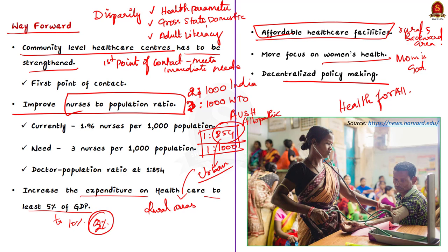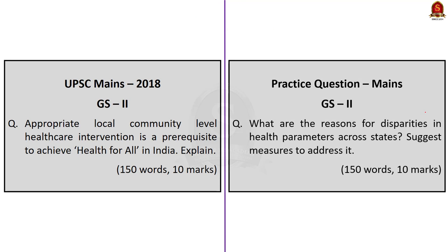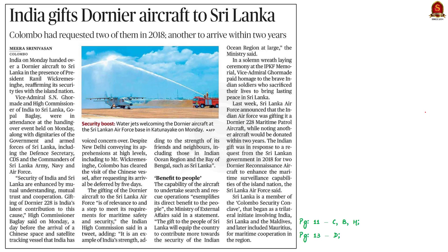These are some suggestions you might give, and you can use data from the data point to substantiate them. There is no perfect template for mains answer writing — if you can justify your answer with a report or study, that's enough. Hope this discussion gave you an idea of how to approach a question and how to use data from the newspaper. That's all about this news article. Now let us move on to the next news article discussion.